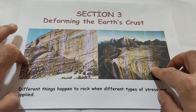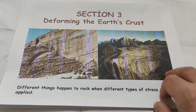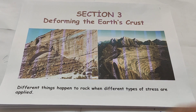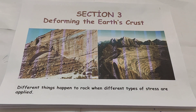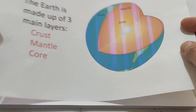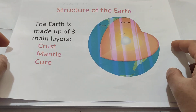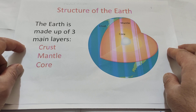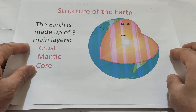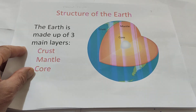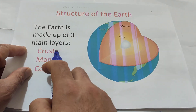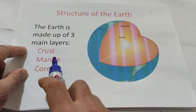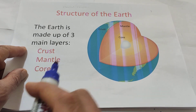Students, before our section, let us remember our Section 1 and Section 2. Section 1, students, firstly, physical layer and chemical layer. The chemical layer of earth, students: crust, mantle, and core.